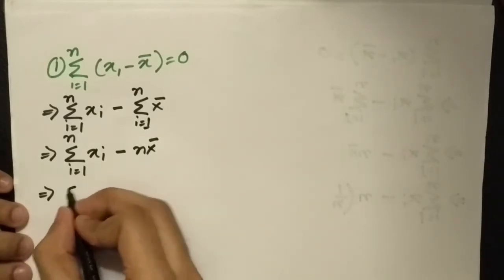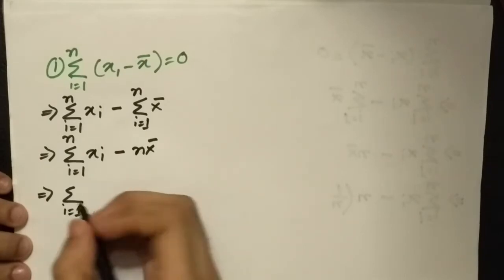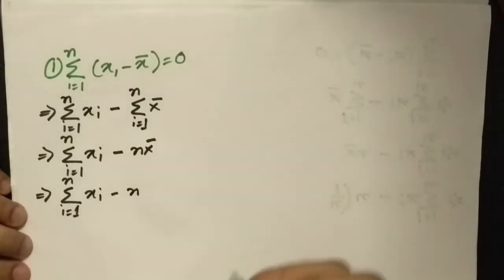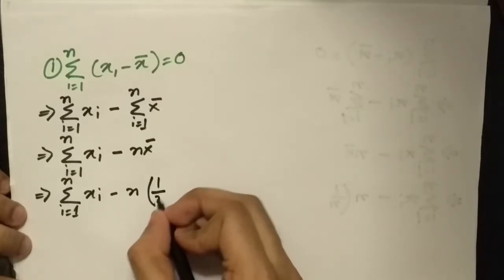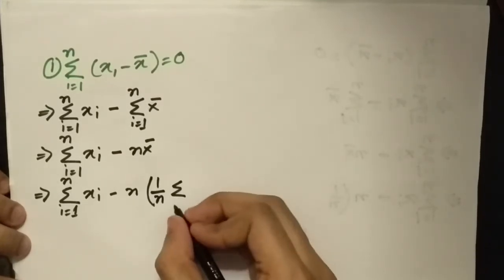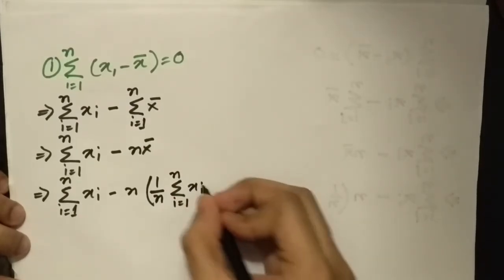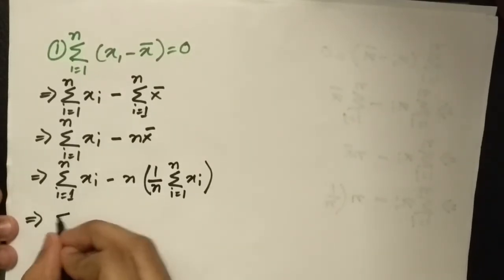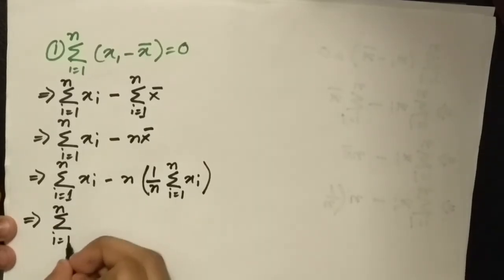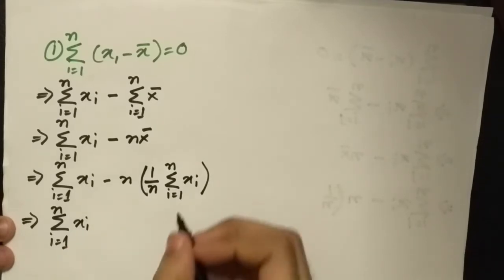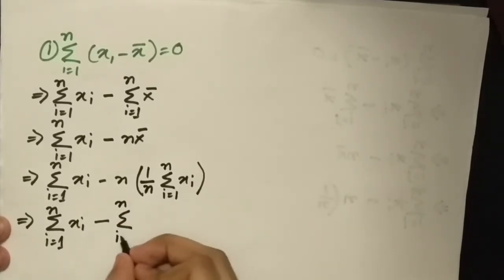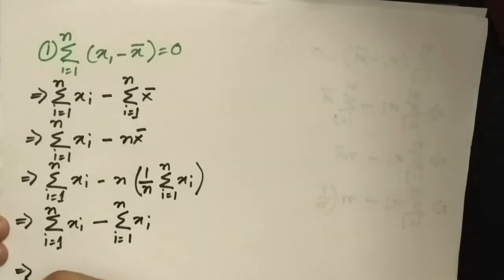Since x̄ is the average, we can write it as (1/n)·Σxᵢ. So n·x̄ = n·(1/n)·Σxᵢ = Σxᵢ. The n's cancel each other out, so we get Σxᵢ minus Σxᵢ, which is just zero. This completes the first proof.